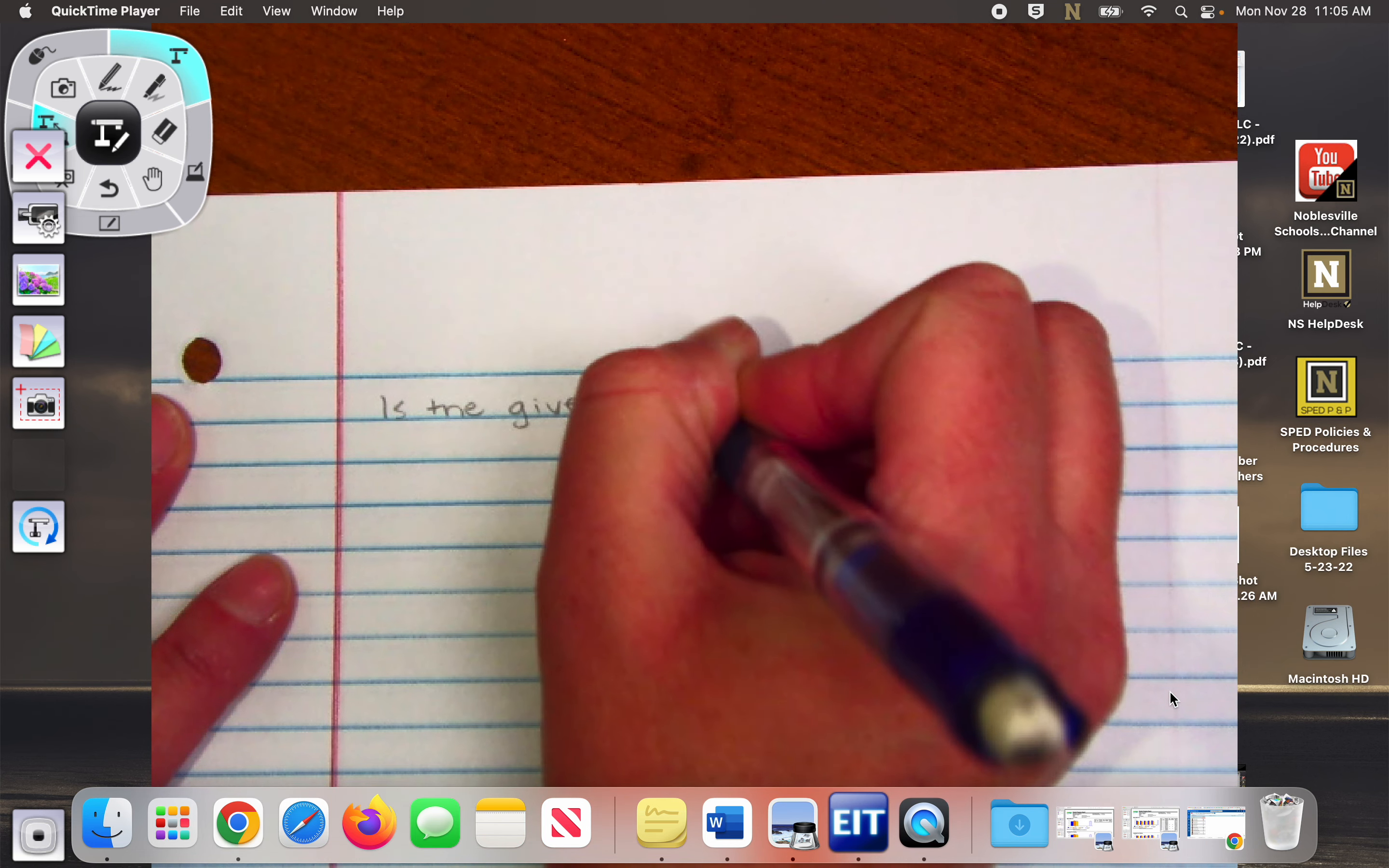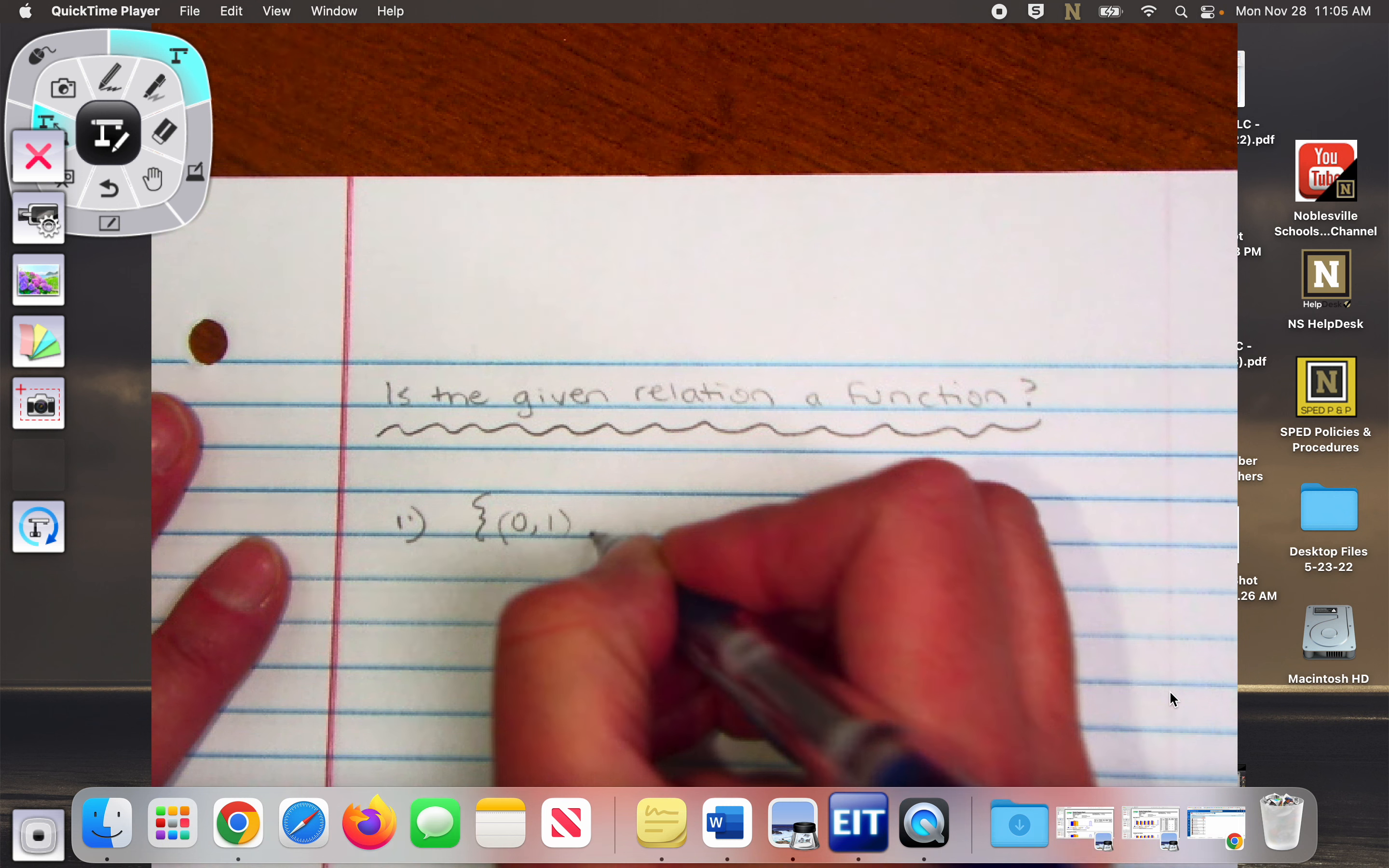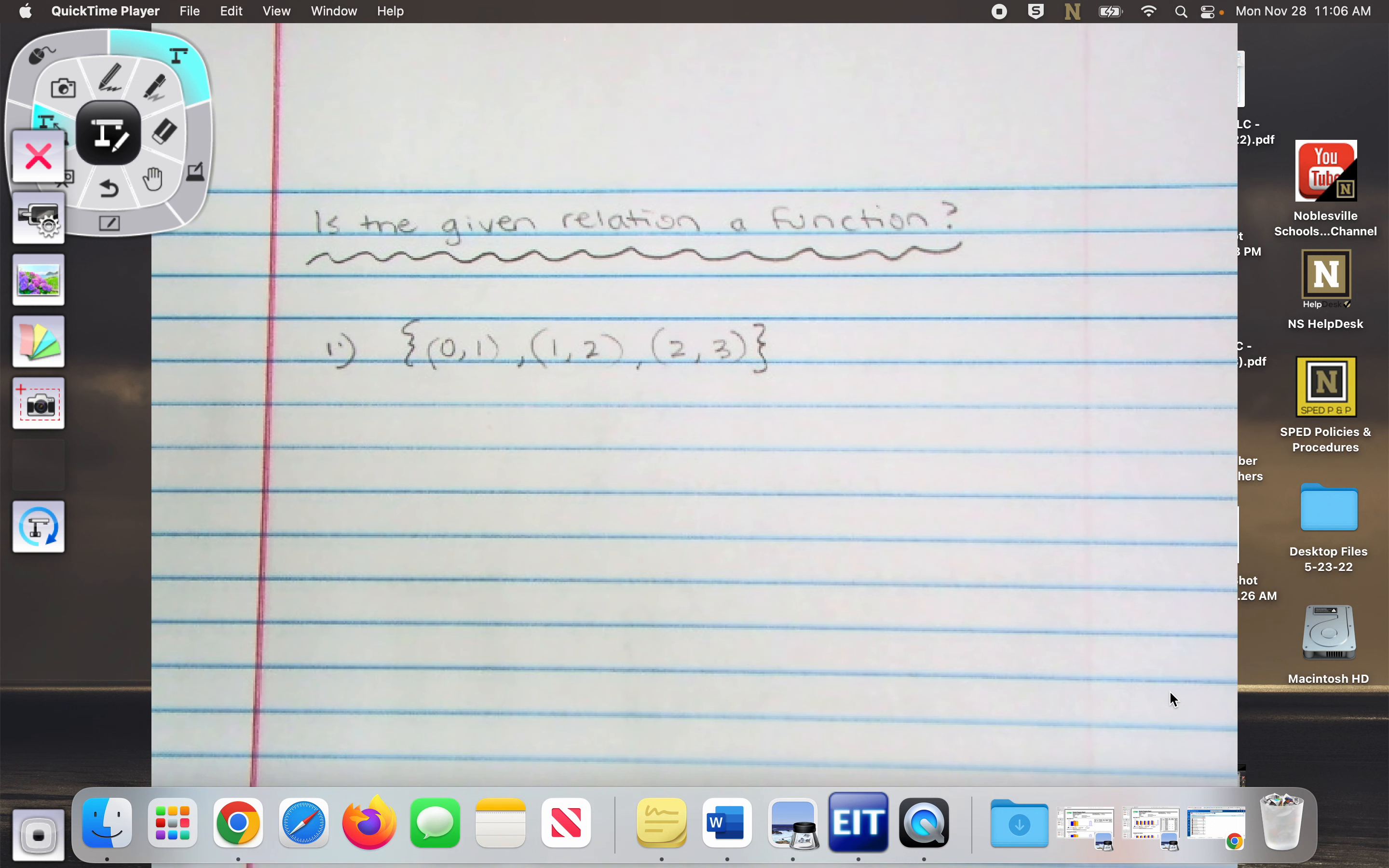Is the given relation a function? So this relation is given as ordered pairs. Wes, are you getting all this written down? You're going to have a new seat tomorrow. You need to prove to me you can actually, what? I'm talking in between each thing I write. I'm not moving too fast. It might seem fast if you don't pay attention and then you look up and the whole page is filled in.